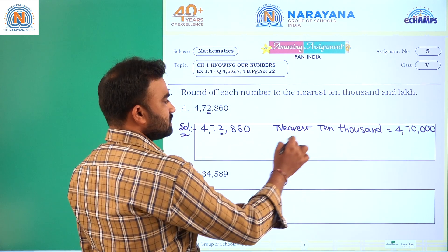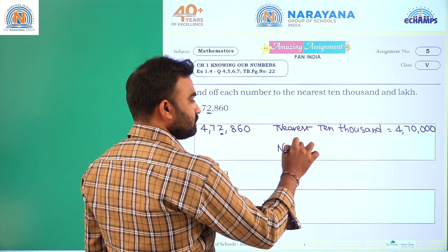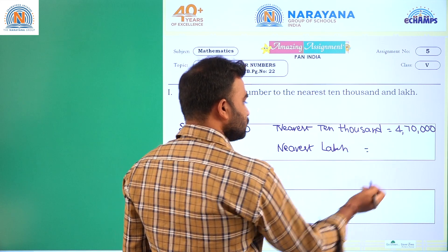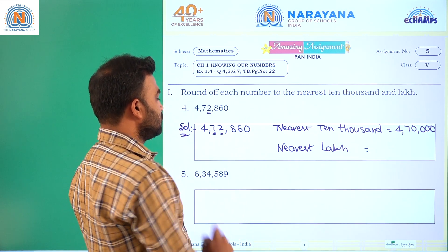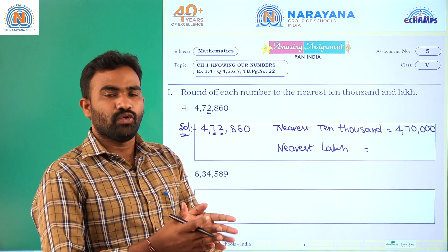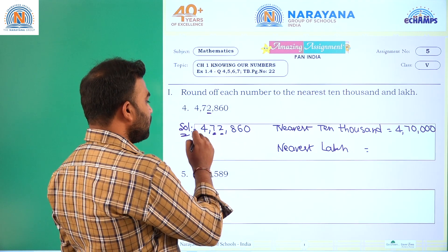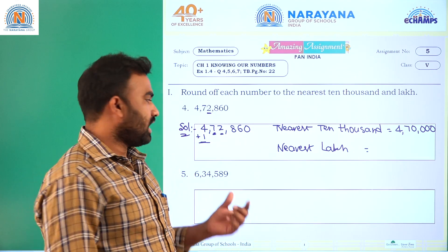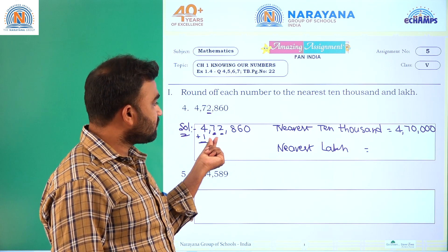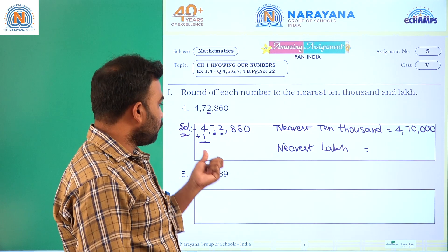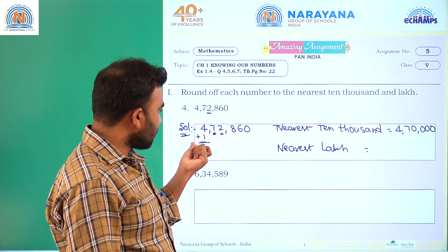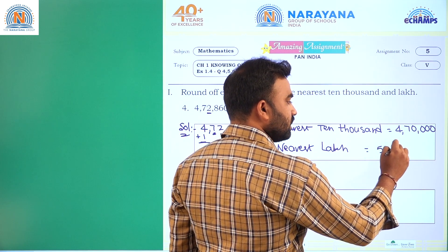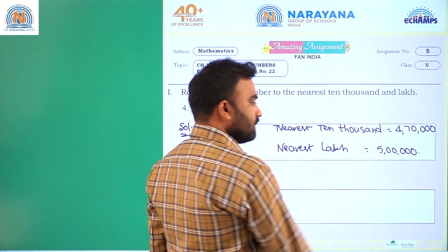For nearest lakhs: the ten thousands place is seven. Since seven is greater than five, we add one to the lakhs place and make remaining digits zeros. Four plus one is five, so the nearest lakh is five lakhs.